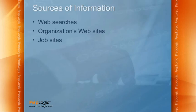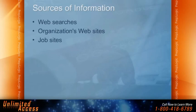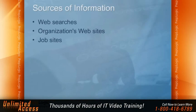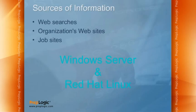Job sites are one of the hidden secrets in information gathering. For example, if you were targeting a particular company, you could go to job sites like Monster.com or Dice.com and search for that company's name to see any jobs they've posted. Narrow that down to technical IT jobs. You'll find information about the systems they're using — if they require knowledge of Cisco routers, they're probably using Cisco routers. If they require Windows servers and Red Hat Linux, they're probably using both. Job sites can reveal a lot of useful information for the ethical hacker.